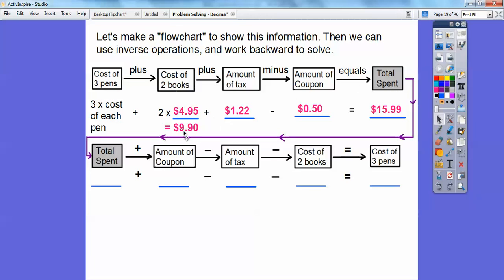Okay, so here it is just going backwards. The total cost plus the coupon minus the tax minus the two books, and that's going to equal the cost of those three pens right there. Okay, all right, so the cost of the two books, this is going to be $9.90 right here. Okay, so let's put the numbers in. So the total amount she spent is $15.99. The coupon's $0.50. The tax is $1.22. Both those books is $9.90.